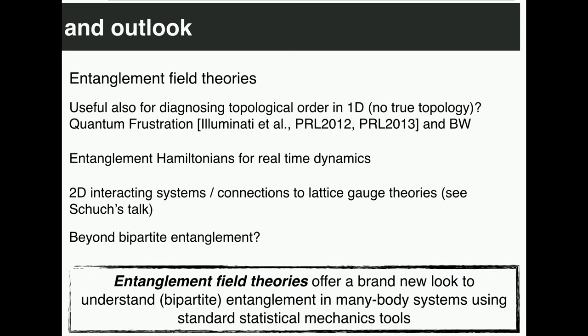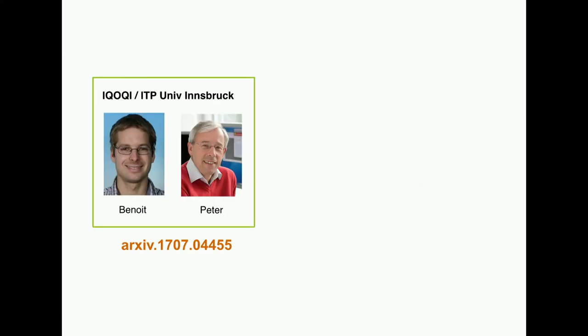In terms of outlook, this connection between density matrices, entanglement, and Hamiltonians strongly suggests one can use a new language for understanding entanglement in many-body systems — the concept of entanglement field theories. We are currently looking at these things in real-time dynamics, for topological order, and for 2D interacting systems. For certain models like lattice gauge theories it becomes simpler. The natural question is: can we extend some of this understanding to entanglement beyond bipartite settings? The bottom line is that this entanglement field theory can really offer a brand new look at entanglement in many-body systems. Thank you for your attention.